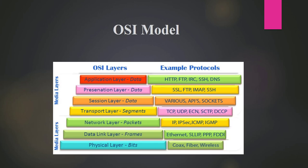Starting from the physical layer (layer 1) to the application layer (layer 7), when communicating through a client or server, data passes through each layer. The representation of data differs: in the physical layer it's bits, in the data link layer it's frames, in the network layer it's packets, in the transport layer it's segments, and in the session, presentation, and application layers it's data. Each layer has associated protocols and security can be applied at each level.